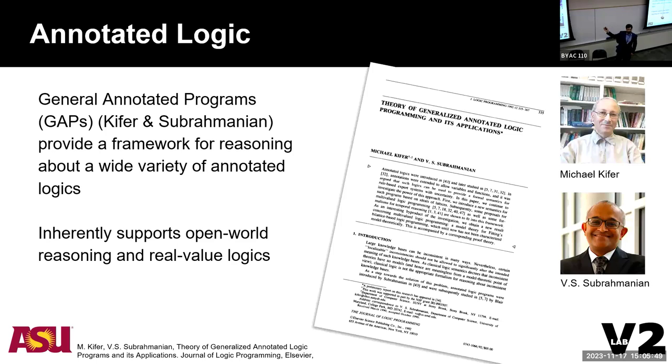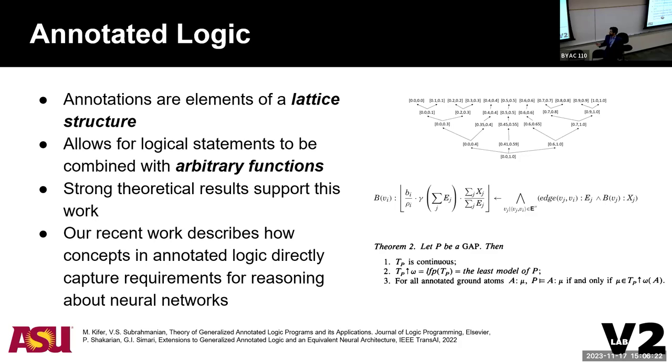There is some moderately famous work from the 90s by two well-known logicians, Michael Kiefer and V.S. Subramanian. It was called generalized annotated logic. And it's a theoretical framework that they were able to prove a lot of aspects about a very generalized logic where the logical elements were associated with a lattice structure, not simply true and false. And a lot of desirable properties were retained by this. So the idea is if you have a lattice structure, you have a series of elements, you could start reasoning at the bottom. Everything starts out with this initial lattice element and it can go up the lattice.